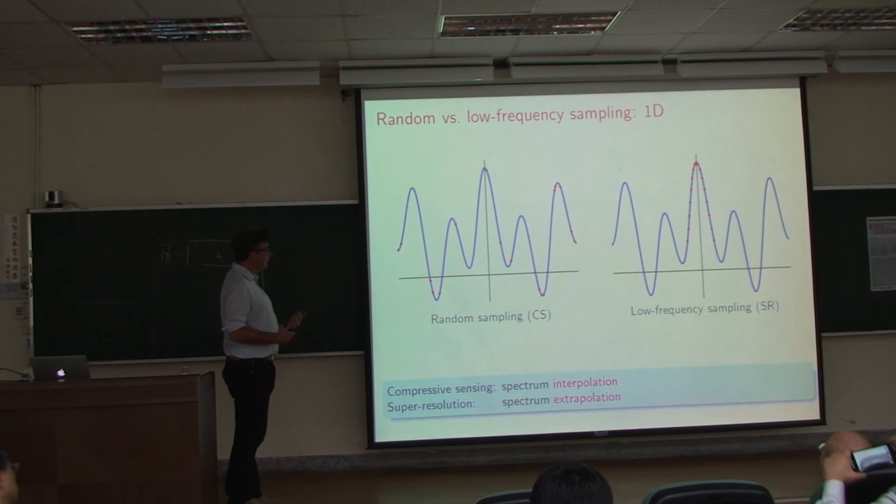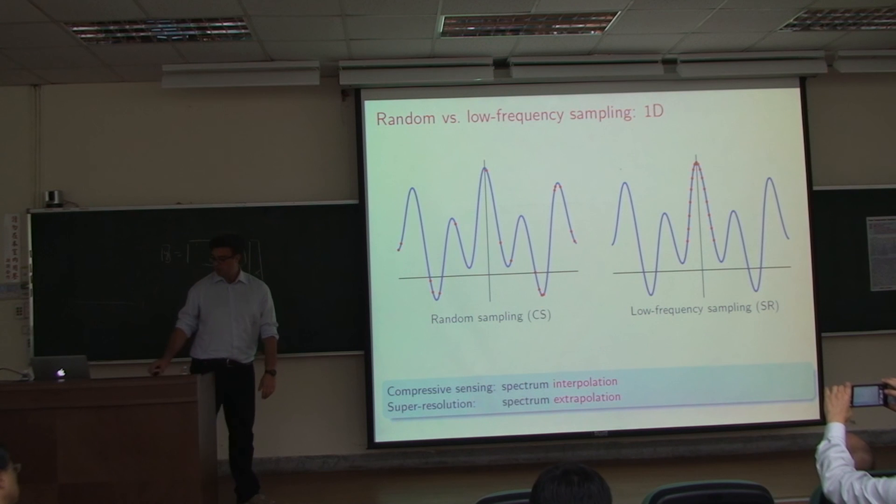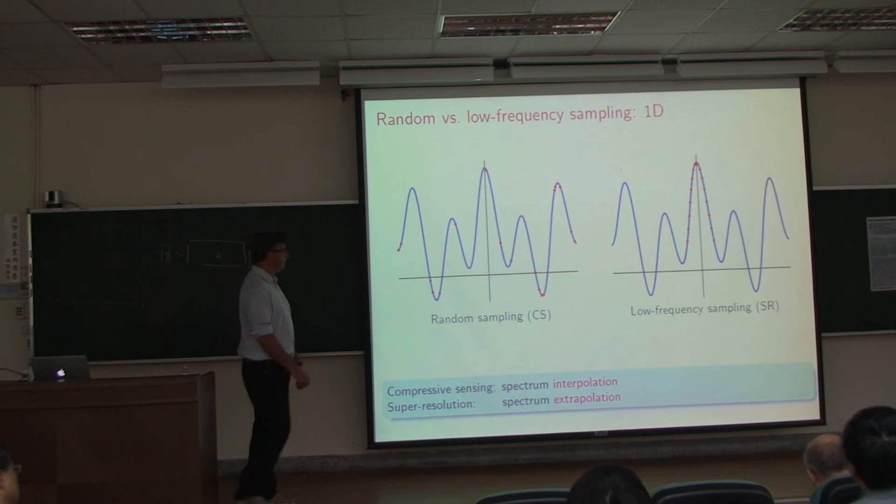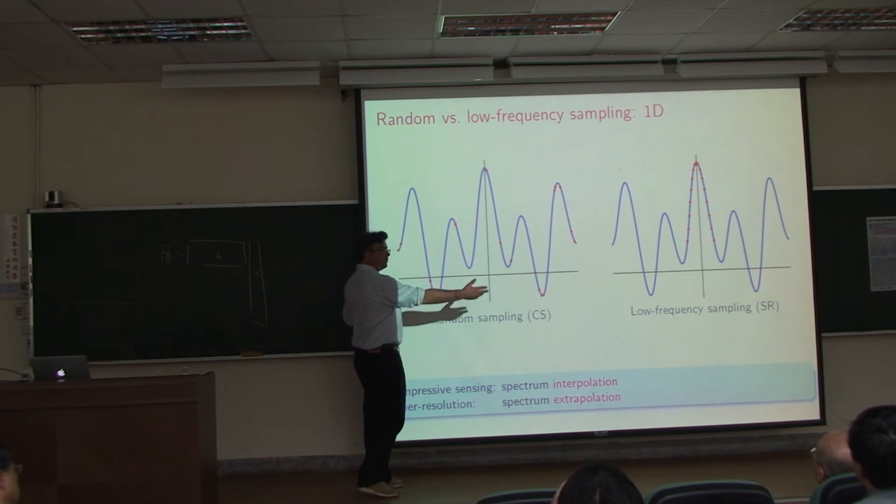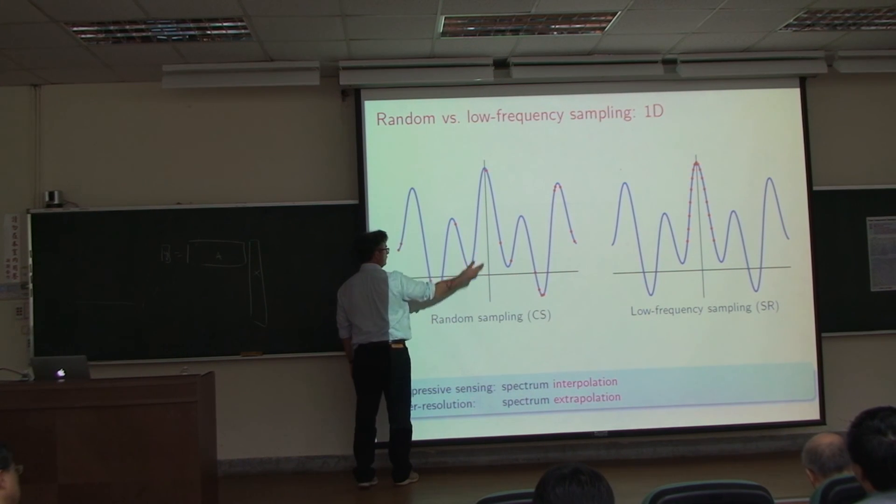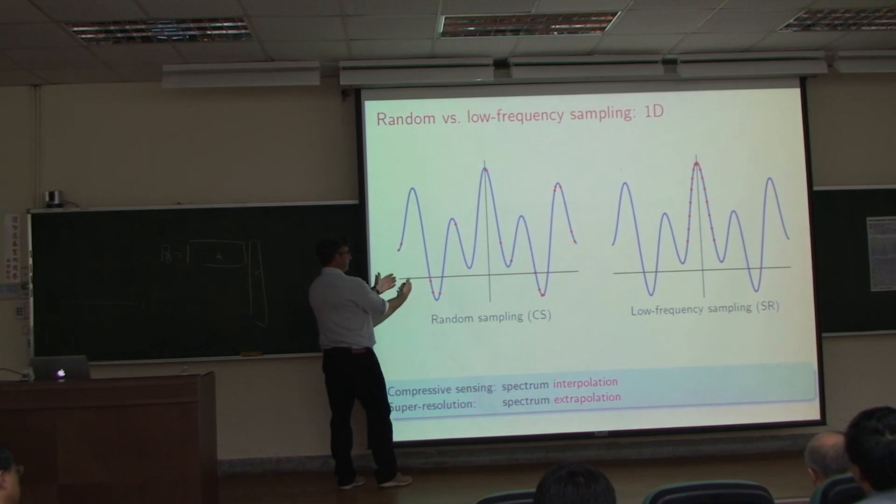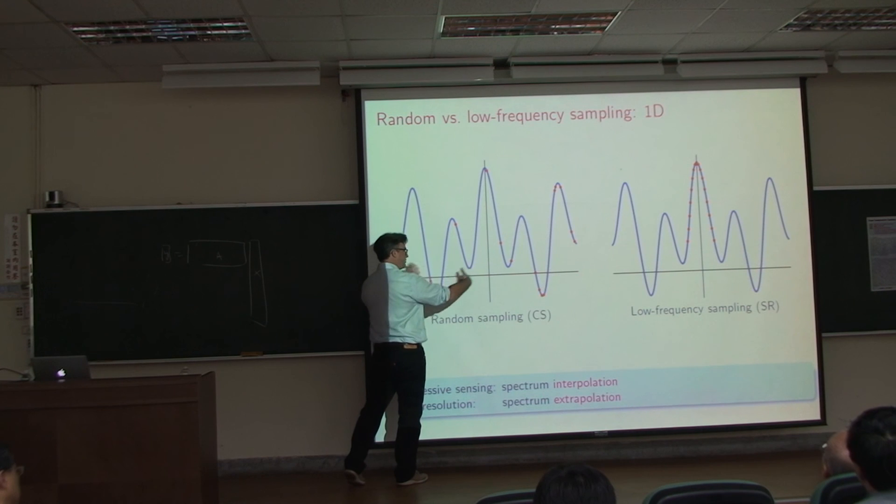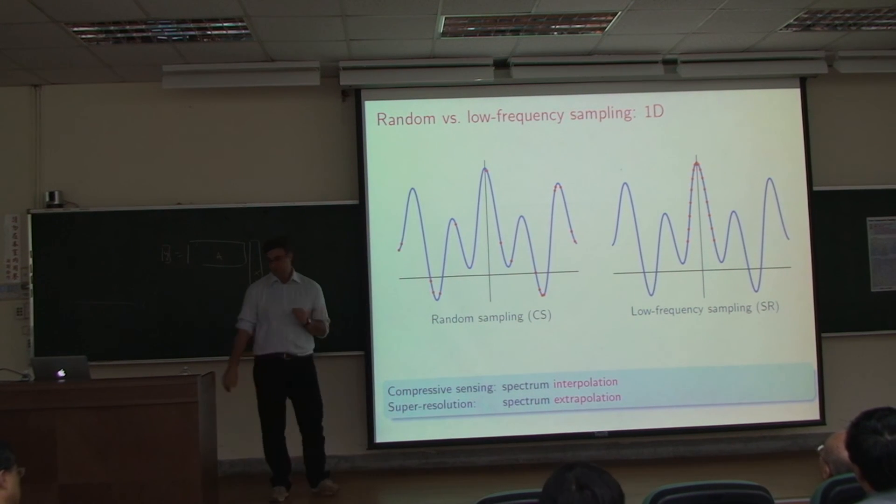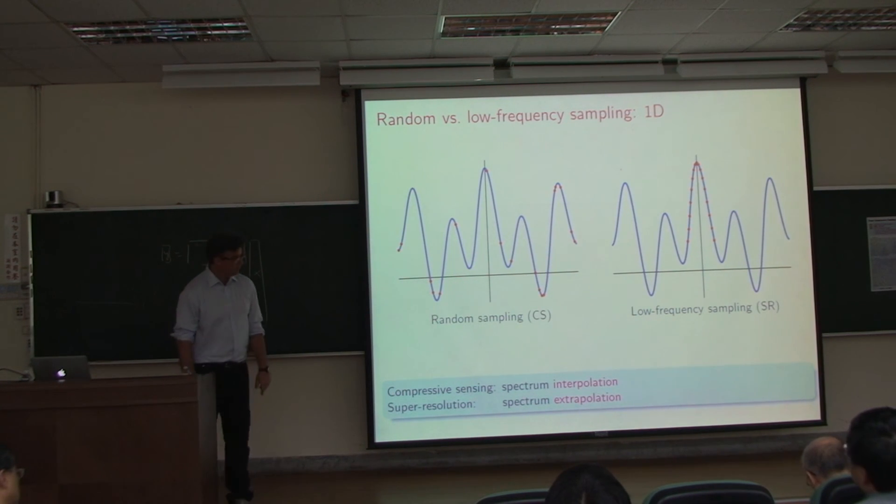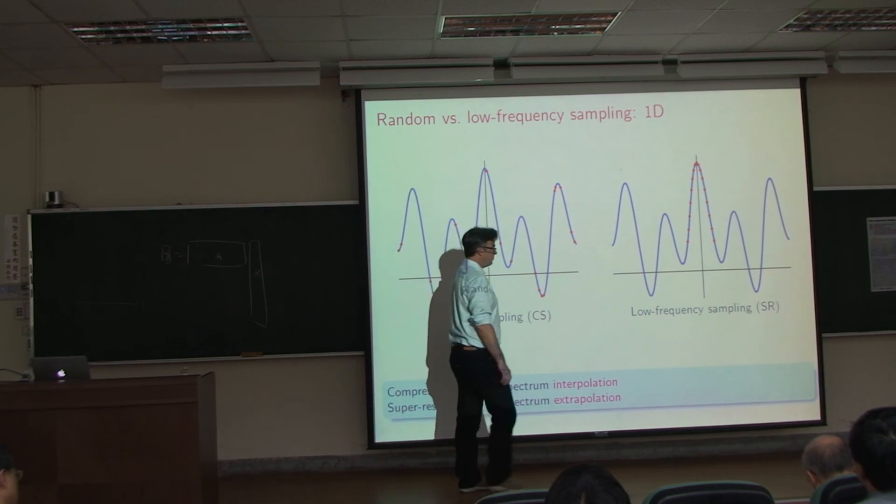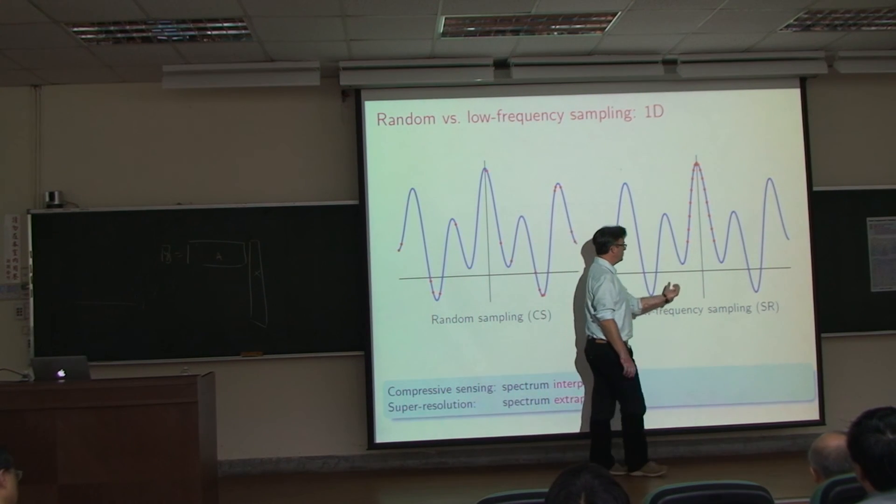This is an important slide explaining why super-resolution is not compressed sensing. In the compressed sensing world, I have the freedom to sample the spectrum wherever I want, and I can sample it at random. I'll see very few samples, and the problem is: can you interpolate it? In super-resolution, you don't have this luxury. In super-resolution, there's physics that dictates what you can do.